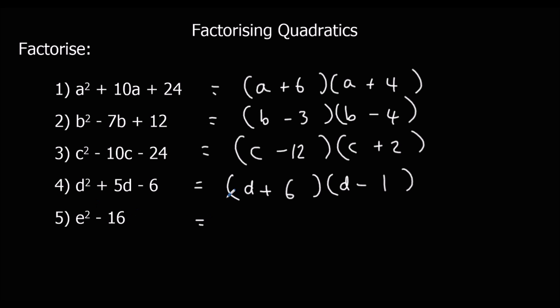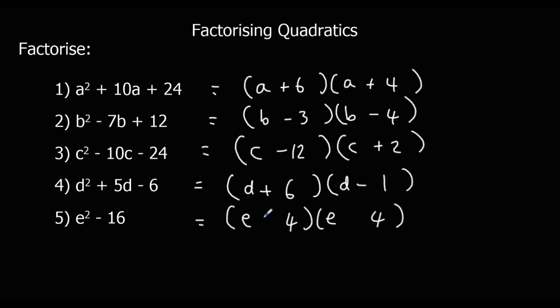And this last one is a difference of two squares. So we have an e in each bracket and a four in each, because four times four makes sixteen — one bracket with a plus and one with a minus.